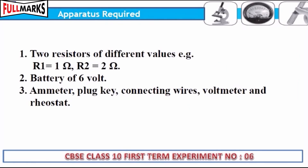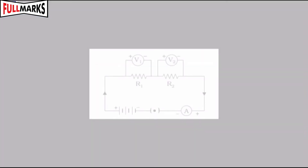Apparatus required: two resistors of different values — for example, R1 = 1 ohm and R2 = 2 ohm — a battery, an ammeter, a key, connecting wires, and a voltmeter.